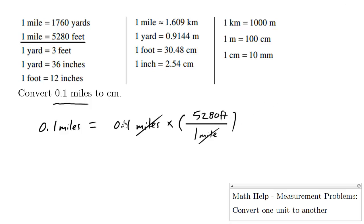So using your calculator, 0.1 times 5280 feet equals 528 feet.